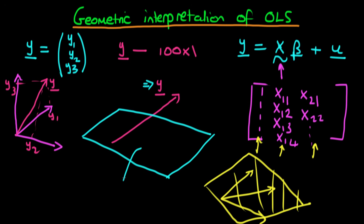We can think about the space which our solutions have to be in as being represented by the column space of X, which is illustrated here. The idea with least squares is that we're trying to get as close to y as possible without leaving this plane, because we've only got so many independent variables. But we can get as close to y as possible while remaining on the plane.